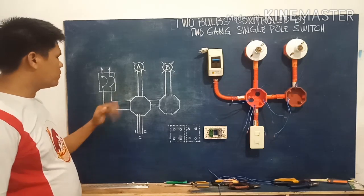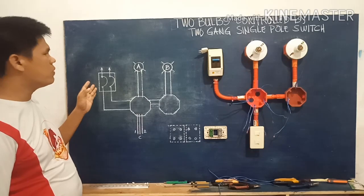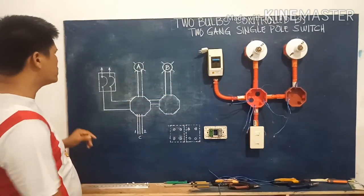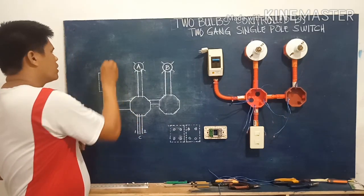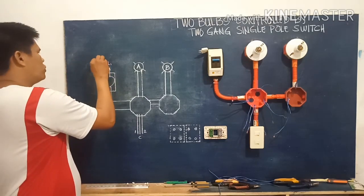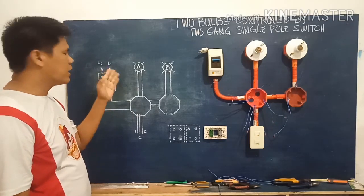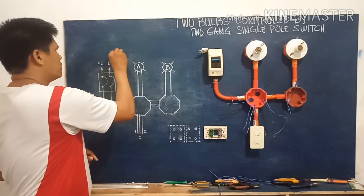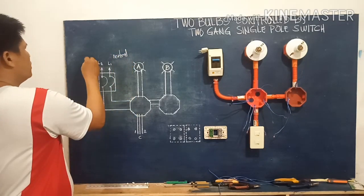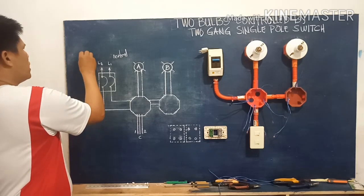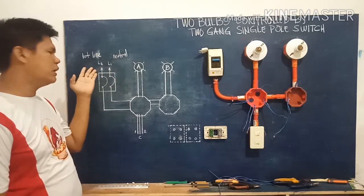We have here in our diagram the symbol for the circuit breaker. On the right side I'm going to use line one, and the other side is line two. In our discussions we always use line one as our neutral line, and line two of course will be the live wire or the hot line.